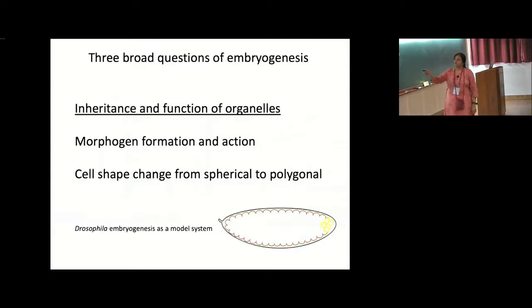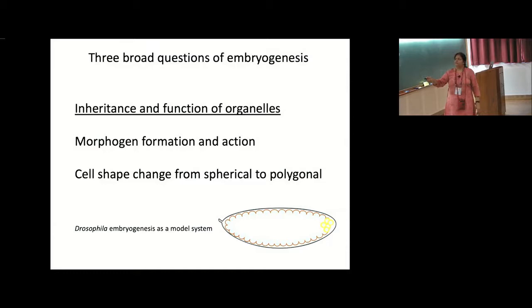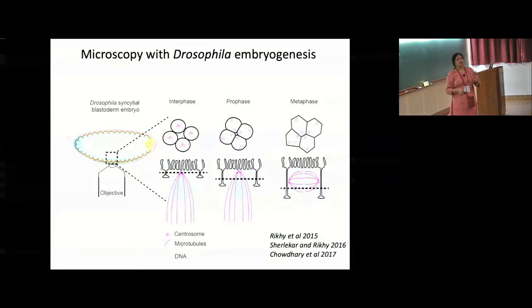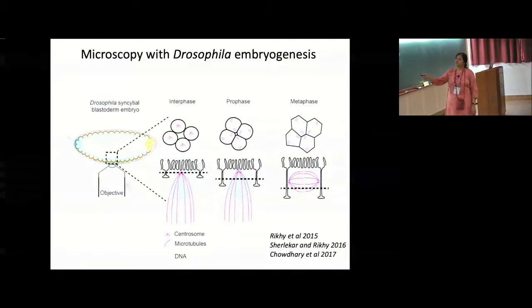Coming to the first part: I want to give you a sense of what the system contains as a backdrop, because diffusion of any molecule in space is occurring through all of that crowded organelle distribution. The cell shape change might be using any or both of these actions. The Drosophila embryo is kind of elliptical. These cortical cells are very easy to do microscopy with — live imaging is a huge tool there. There is a distinct cell shape change which takes place from circular to polygonal.